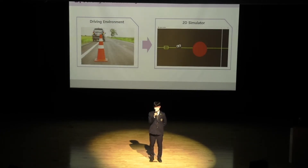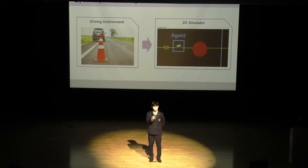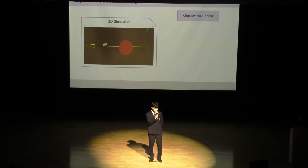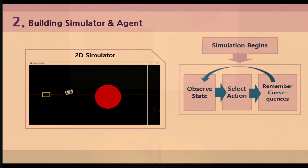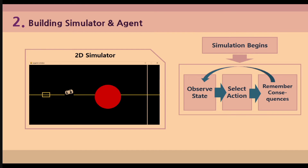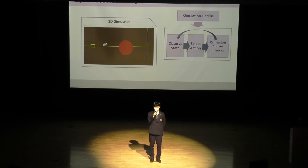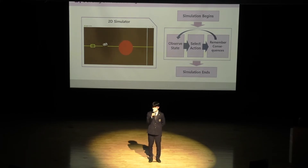I first made a simulator that resembles a real self-driving environment. There is a vehicle — the agent — whose goal is to avoid obstacles and reach the finish line. In each time step, the agent observes the state of the simulator environment and decides its action: accelerate, decelerate, turn left, or turn right. That decision is applied to the simulator, and the agent remembers the consequences. This loop repeats until the simulation ends — either when the agent reaches the finish line or crashes.